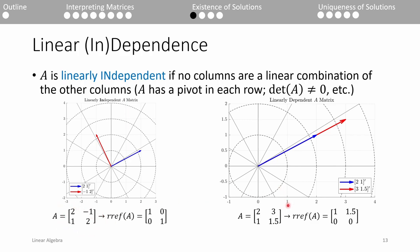On the right, we have a different A matrix. If we plot both columns, it's apparent that they both point in the same direction. That means we can express one vector as a multiple of the other vector. This means that the columns of this A matrix are linearly dependent.